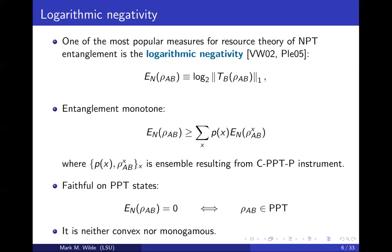The other thing about logarithmic negativity that Plenio showed — and it might have been Vidal and Werner before that — is that it's neither convex nor monogamous. Logarithmic negativity was defined many years ago, and then recently with Xin Wang, we defined in this paper what we called kappa entanglement, following a tradition of Xin's. Whenever he invents a new measure, which he's done many times, he assigns a Greek letter to it. Since kappa was free, we chose it for this entanglement measure.